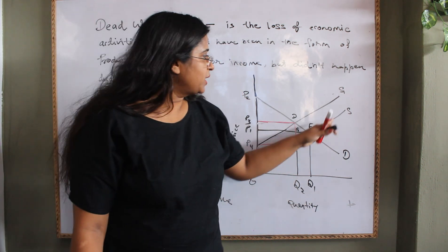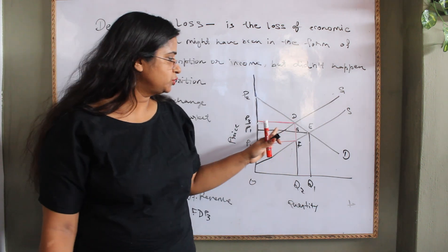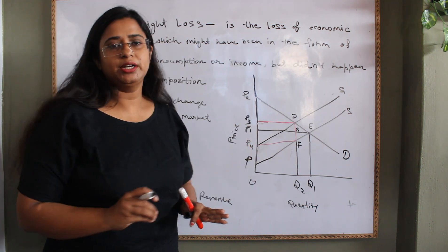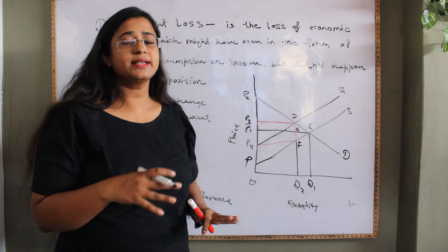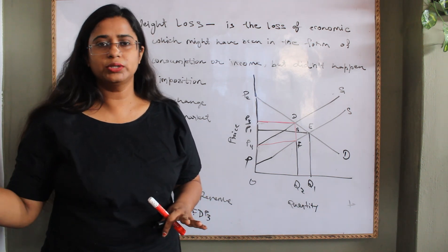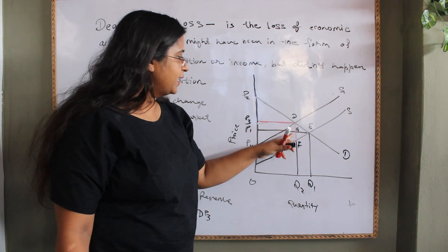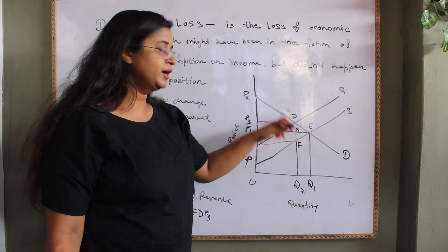The supply function of that commodity will shift to the leftward. That means for the same quantity higher price is charged because tax is going to go to the government revenue. And it intersects the demand function at point B.